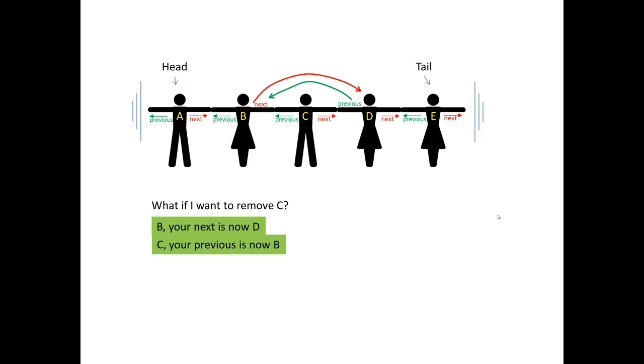Now, C is not referenced by anybody. C is still referencing B and D as their previous and their next. But who cares? C itself is not referenced by anybody. And then the garbage collector will come and take it. And there you go. You have a doubly linked list. And there's no C in there. And all the links on both directions work fine.